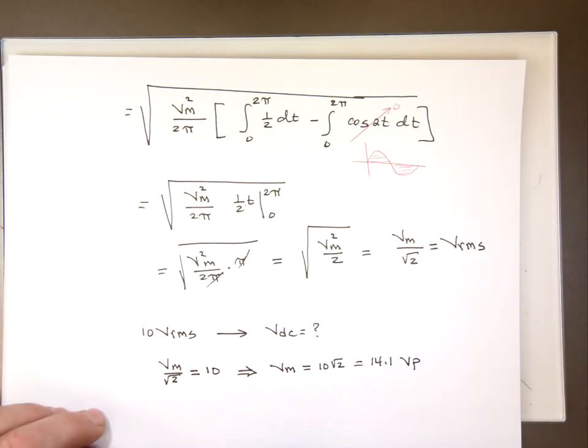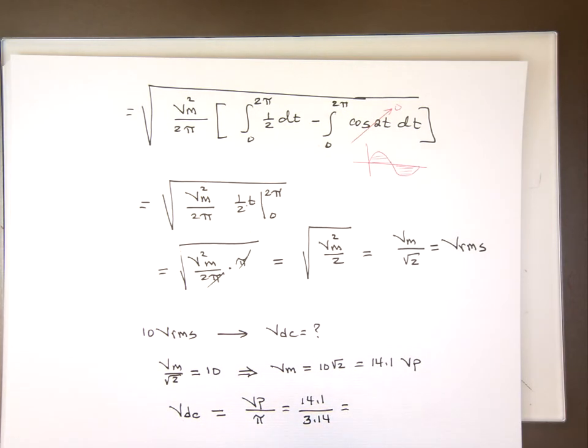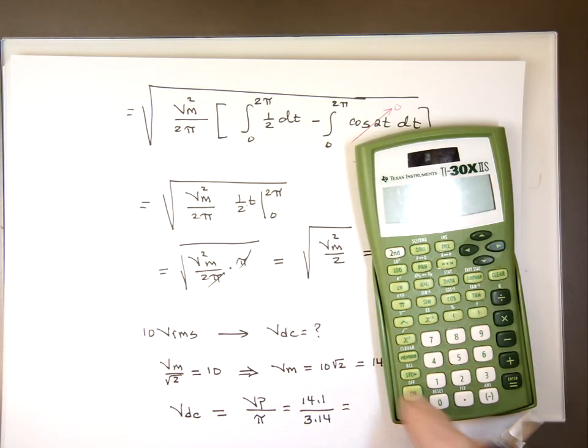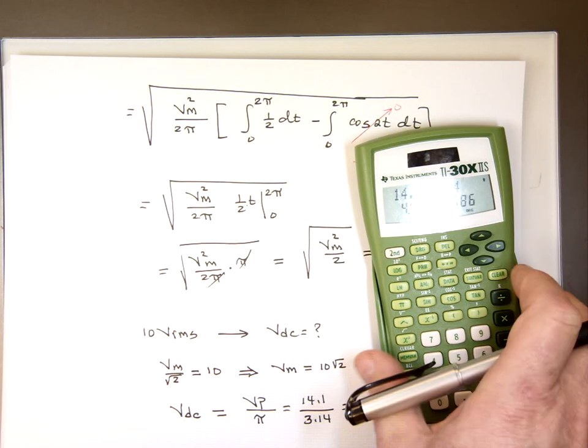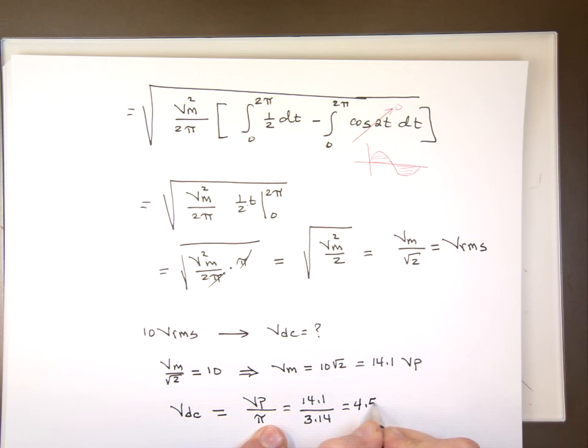And the V DC now, which is the average value, is VP or peak value divided by pi. So it's 14.1 divided by 3.14. And that's equal to 4.49, roughly 4.5, 4.5 volts DC.